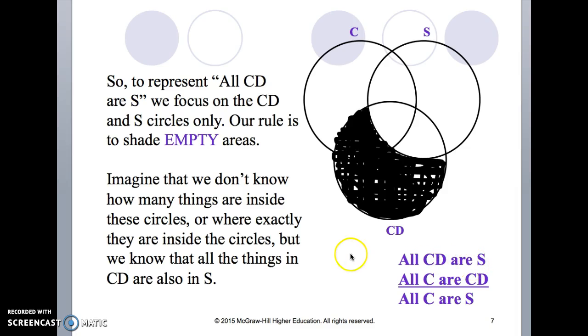Ignore this third circle, the C circle, just for now because we're only working with the first premise CD, S. It says all CD are S. How we shade that would be to shade all this out here because shading means empty.